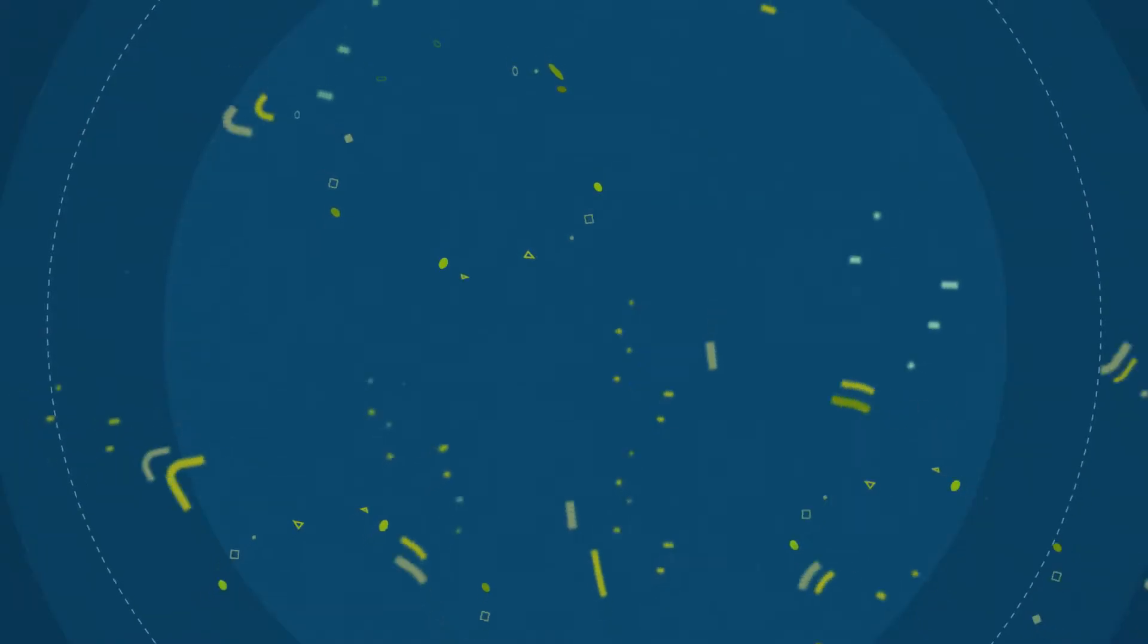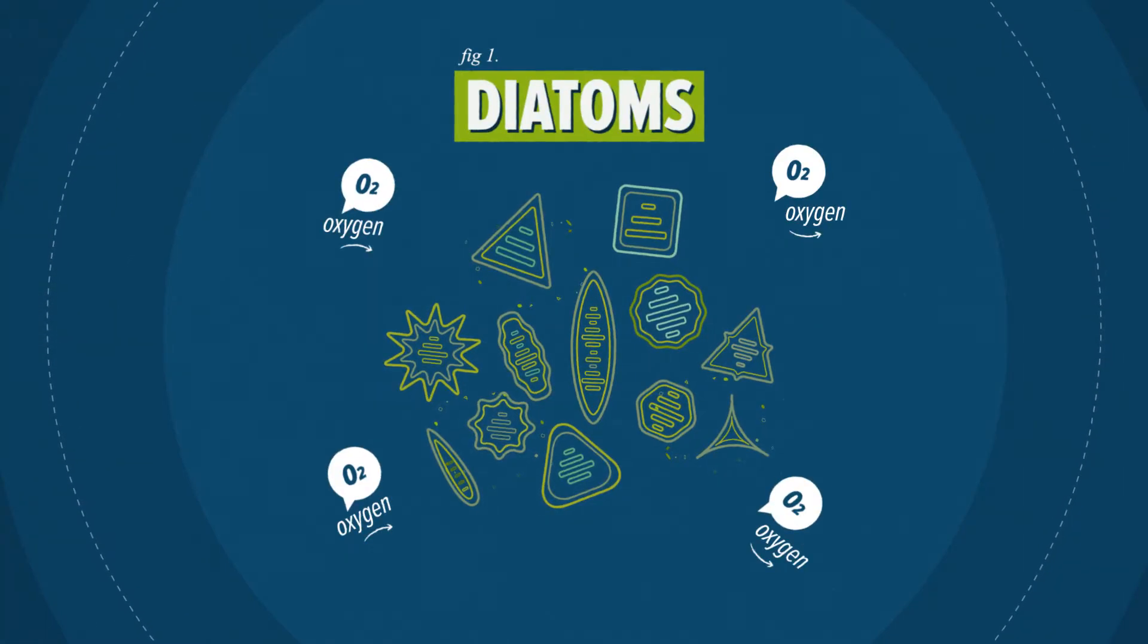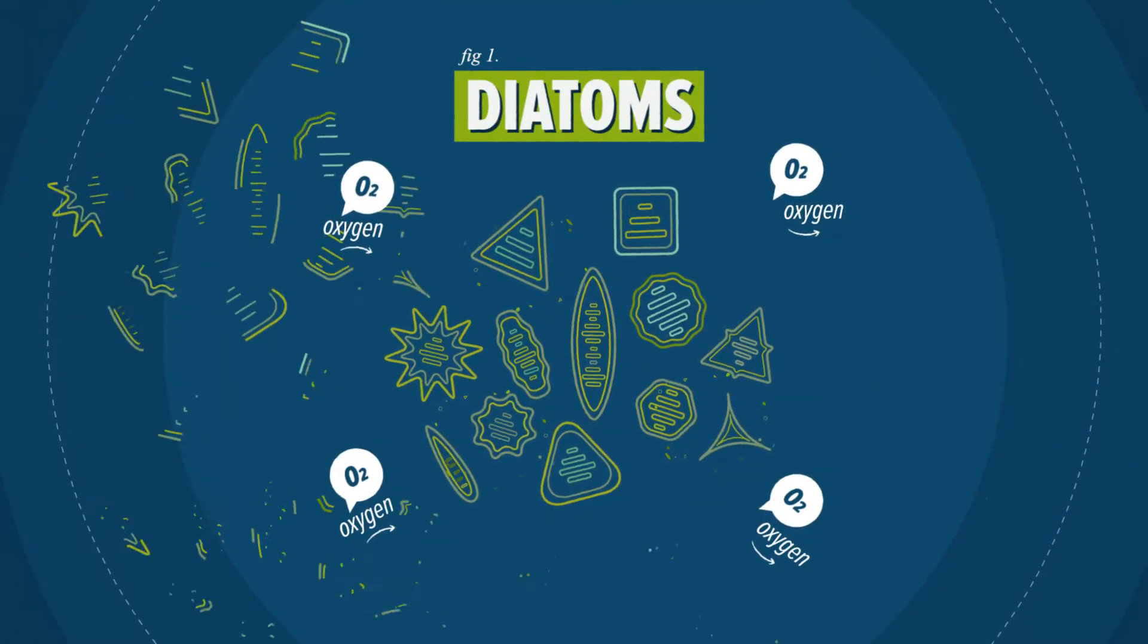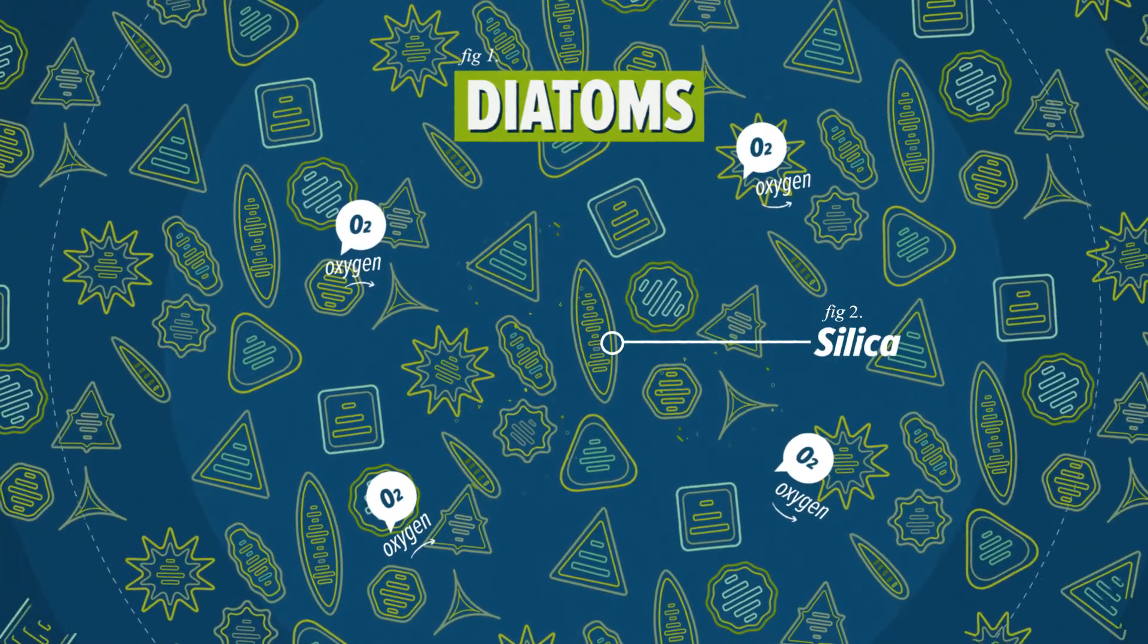The most dominant producers of oxygen in the ocean are the diatoms. Diatoms are the most species-rich group of microalgae. Their cell walls are composed of silica.